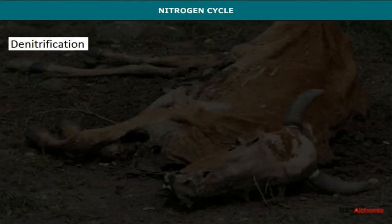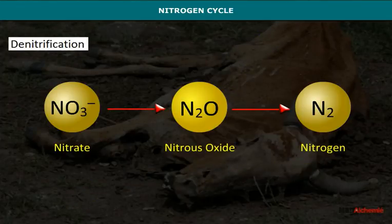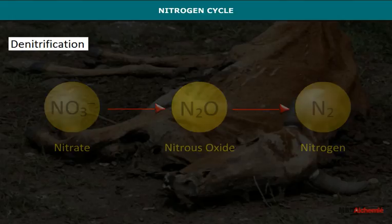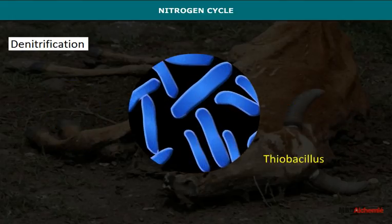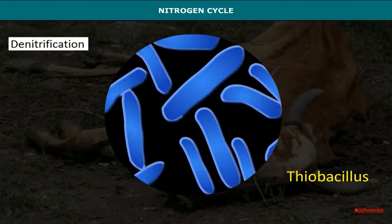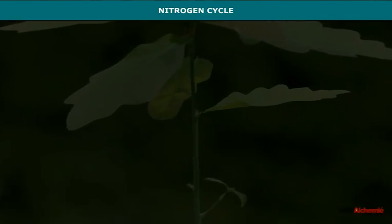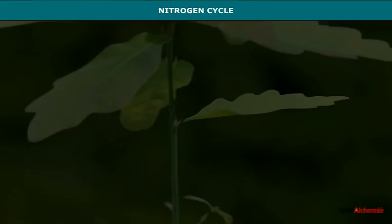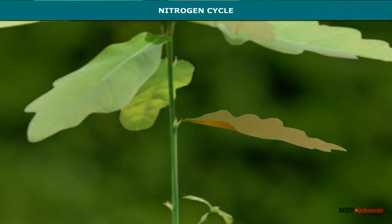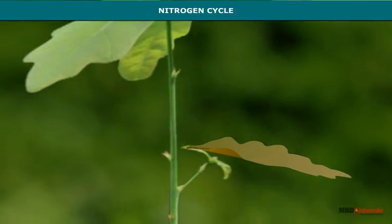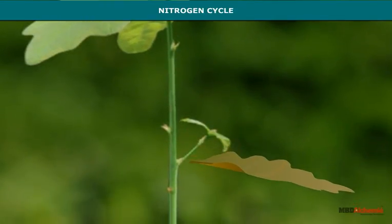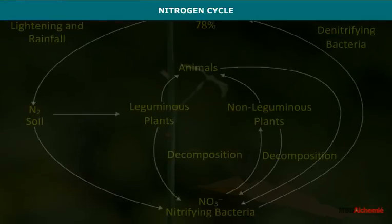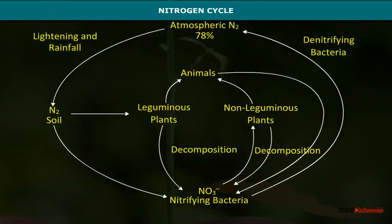Denitrification. Conversion of nitrate to nitrous oxide and then to molecular nitrogen is carried out by denitrifying bacteria, Thiobacillus. Thus there is continuous cycling of nitrogen between the atmosphere and living as well as non-living systems.